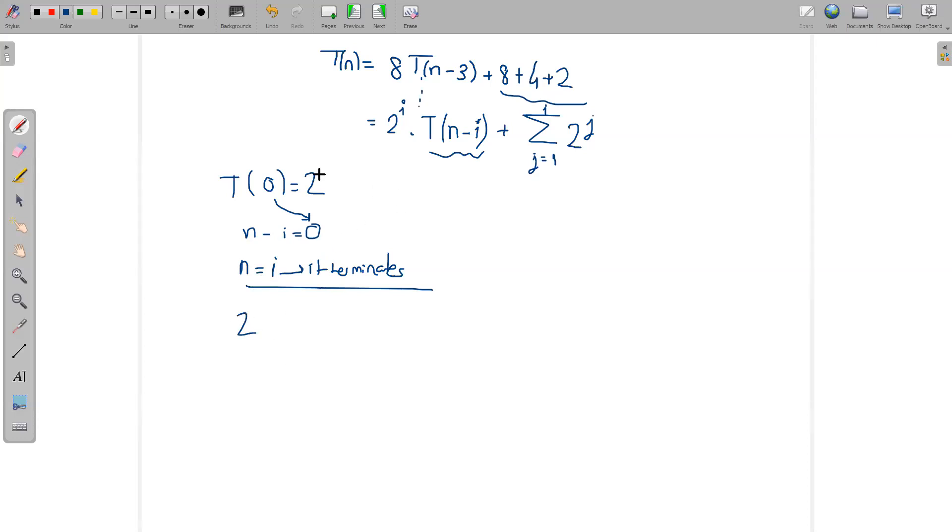So let's say that n is i. So after that, when n is i, it will terminate: 2^n·T(n-n) = 2^n·T(0), plus that value, which will go to the summation from j=1 to n of 2^j, because i is now n.